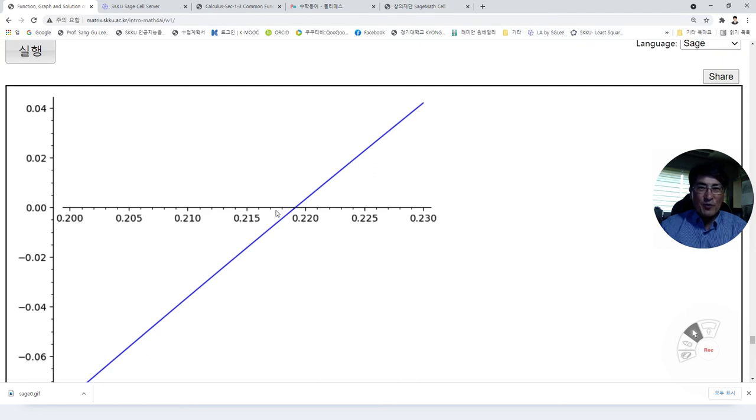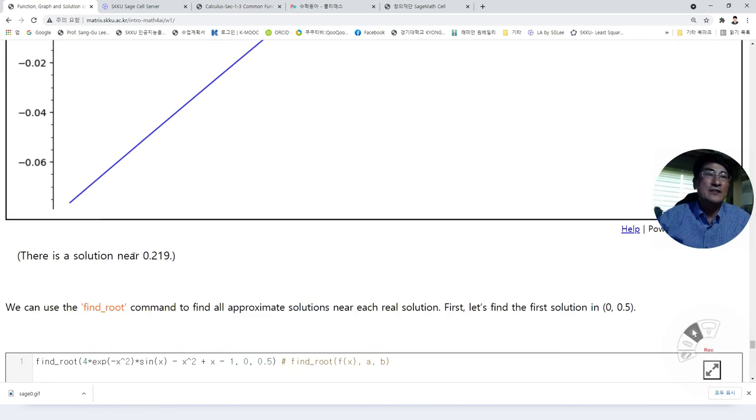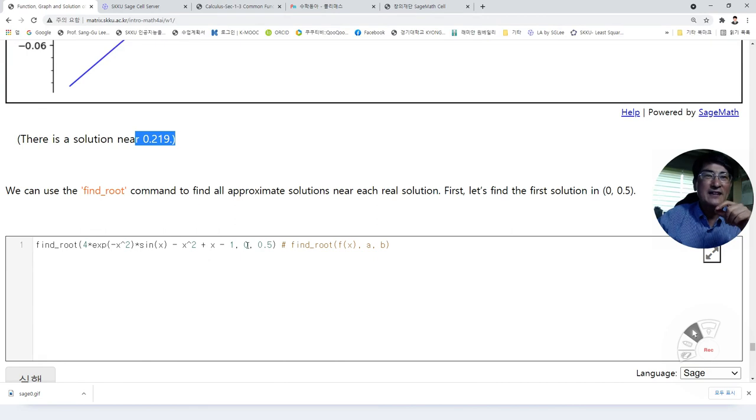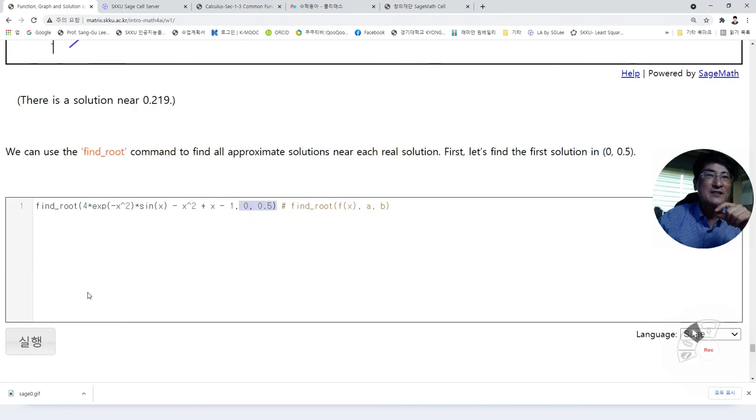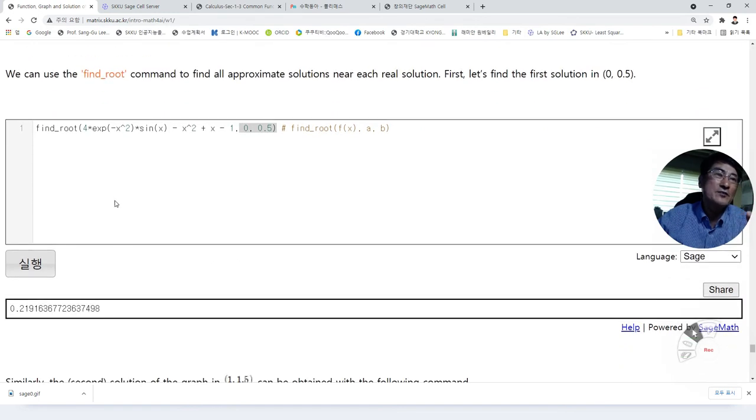The solution is 0.21, 5, 6, 7, 8, almost 9. So, we have 0.2219 is almost a solution. And the next one is on this interval. Actually, we can find the solution in this way. If you use find root command on this, it gives us the numerical solution. Actually, this command was produced with this technique.